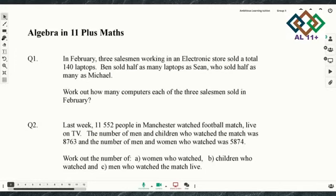Ben sold half as many laptops as Sin, who sold half as many as Michael. You need to work out how many computers each of these salesmen sold in February. I'll give you a minute to look at the question, then I'll do the working out with you so you can check if your answer matches mine. Remember to like and subscribe to the video — it really helps us make lots of new videos for you.